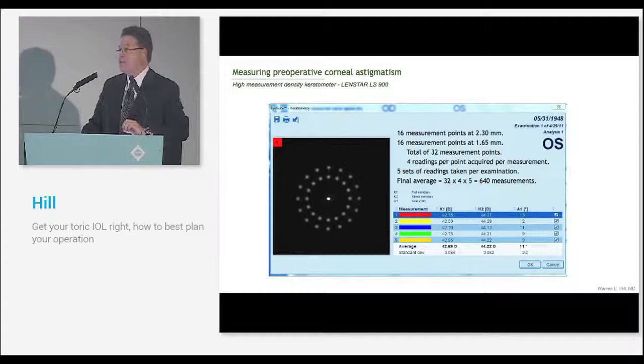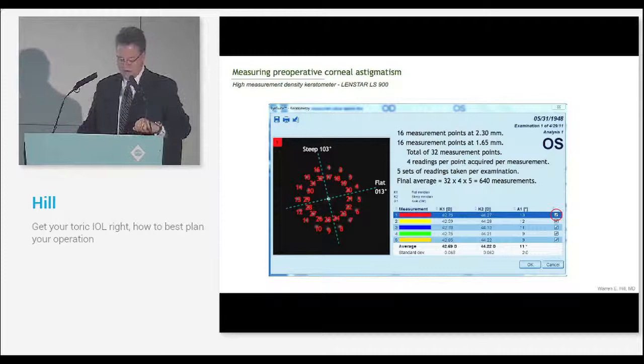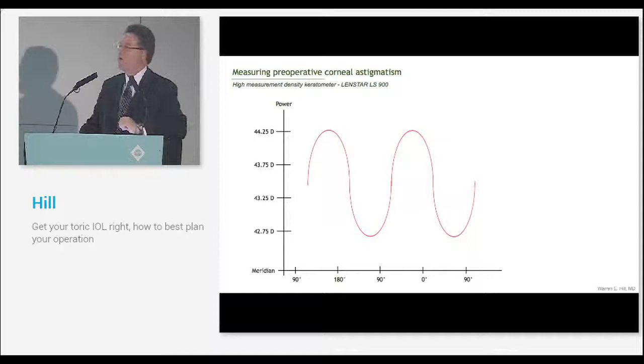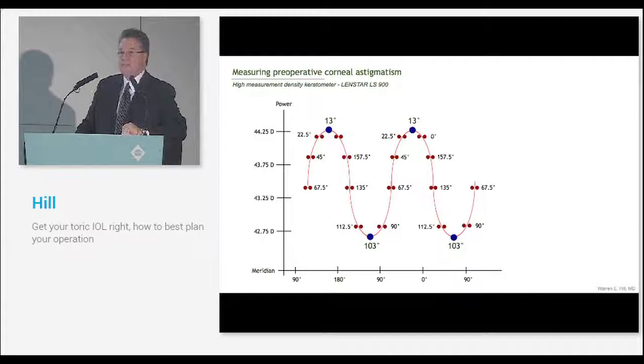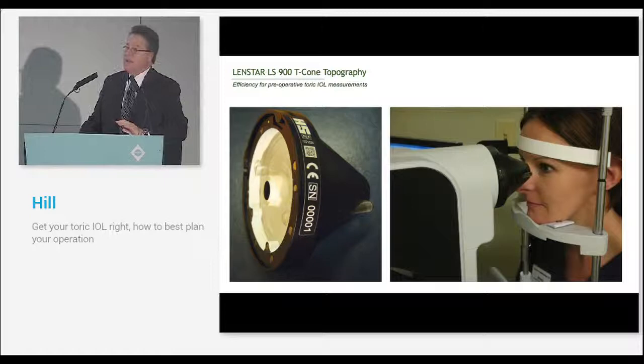This is the LenStar, an example of higher density autokeratometer. We have a lot more measurements. In fact, we have two rings, one at 1.65 and one at 2.3 millimeters. There's the outer ring, there's the inner ring. If we look at measurement number one, this is the steep meridian, and there's the flat meridian. You can see there's not as much space in between. If we look at kind of an approximation of how the software works, you can see we have a lot more points, and there's less iteration that has to be done by the instrument. So higher density autokeratometry is much better suited to the process of using the toric IOL.